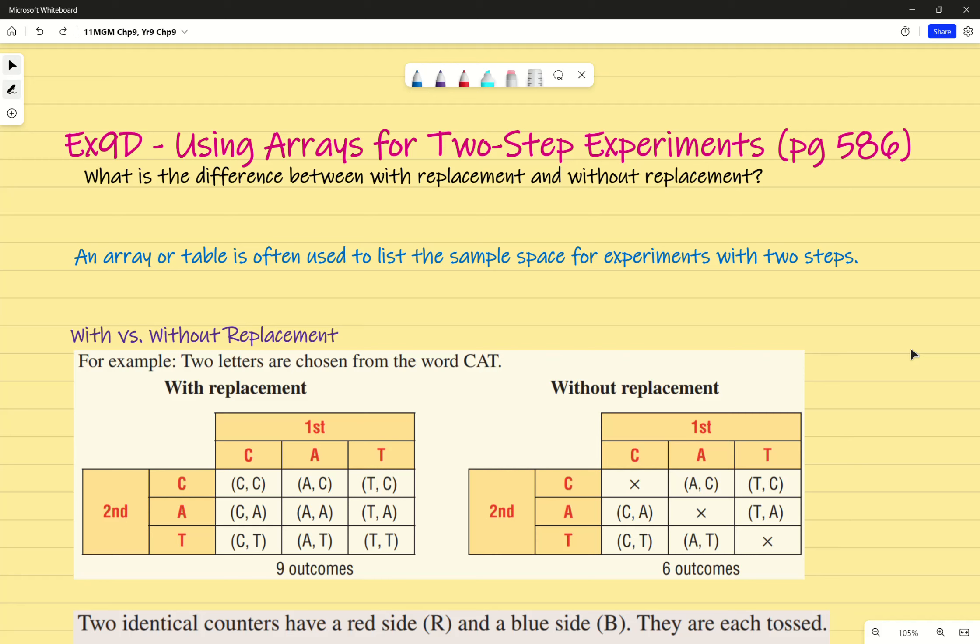A lot of the calculations we've done so far are with replacement, which means that when you take a letter out of the bag, you put it back in, and then you do the calculation again. You take a letter out, you put it back in, you keep going. But how does that change if we don't replace the letters?